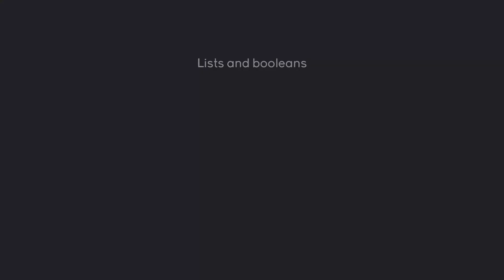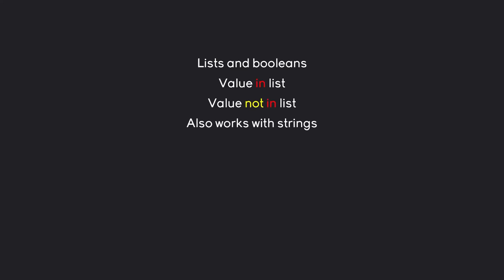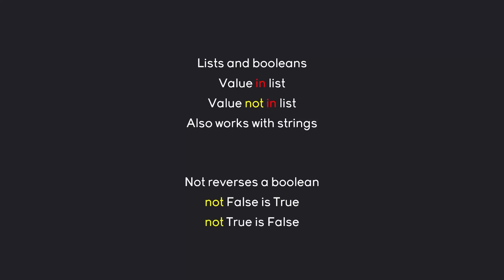For the next part, we can look at lists and booleans. We can check if a value is in a list or if a value is not in a list, and this also works with strings. An important point here is that 'not' reverses a boolean — if we have 'not false' it is going to be true, and if we have 'not true' it is going to be false.